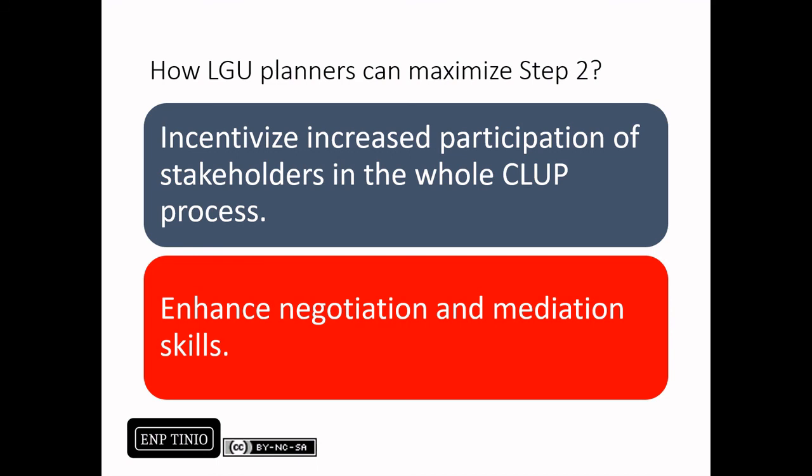Second, LGU planners can maximize Step 2 by enhancing their negotiation and mediation skills. In following steps, stakeholders will definitely exercise their powers and interests in the local planning process. It is important as an LGU planner to not dictate, but to mediate. We can propose plans and programs, but the different stakeholders involved have their own interests and their own meanings of benefits and costs, which the LGU planner and the local government as a whole should understand and integrate.